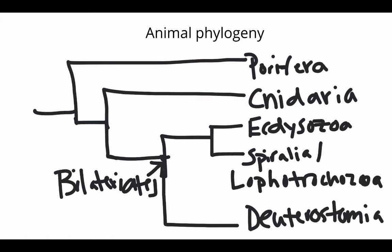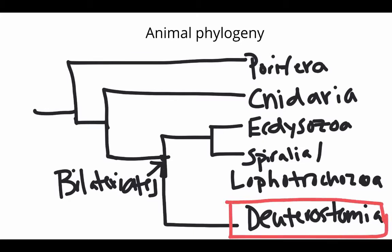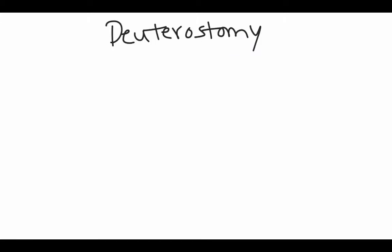Note that there are organisms in the Spiralia Lophotrochozoa group that do have deuterostomy-type development, but the deuterostomia do as well — so that's where we're looking. In deuterostome-type development, or deuterostomy, there are a number of characteristics.